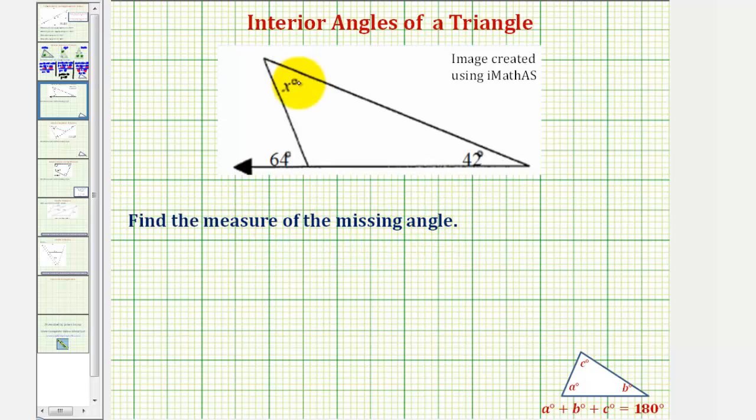We want to find the measure of the missing angle given here as x degrees. We know the sum of the interior angles of any triangle is equal to 180 degrees.